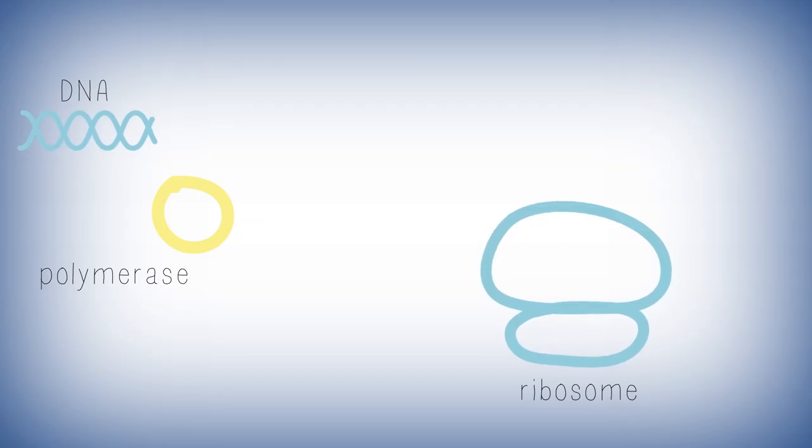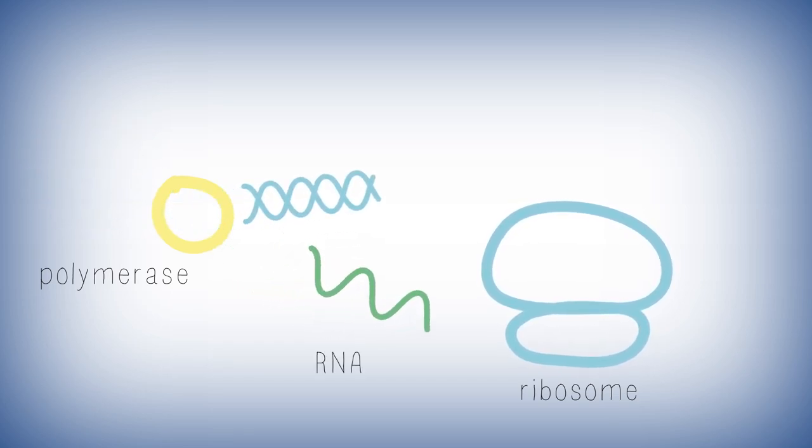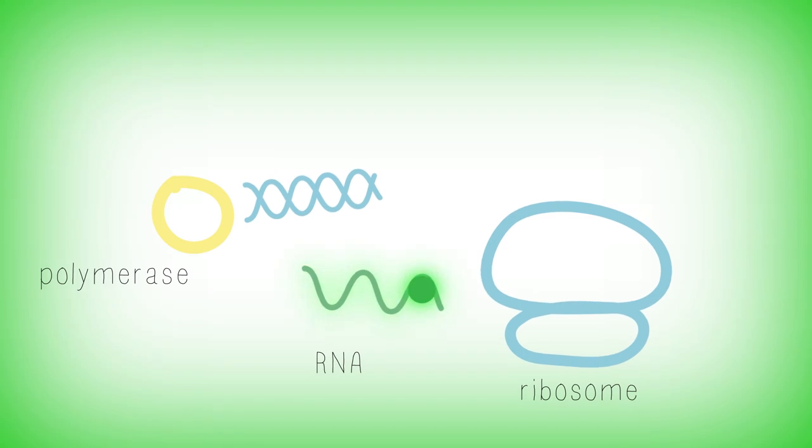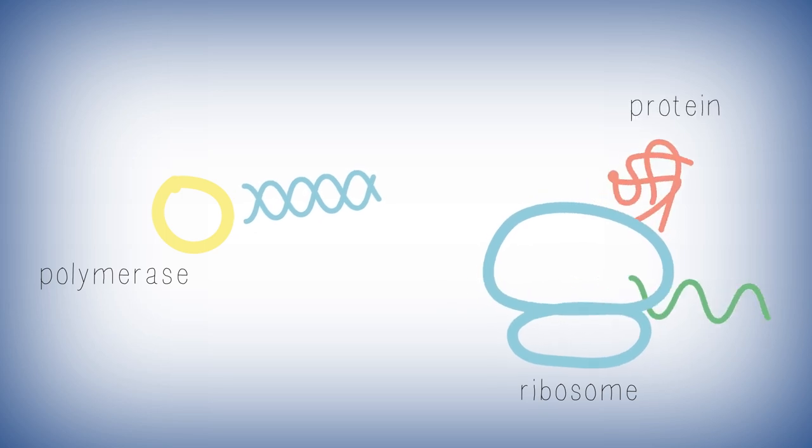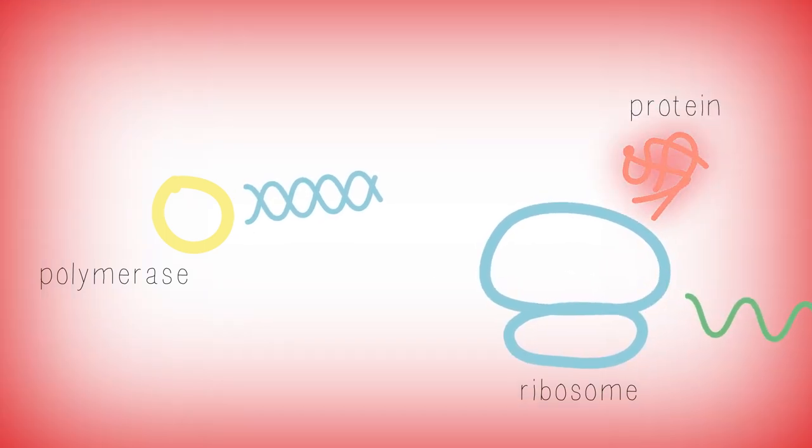When you add our specially designed DNA to the BioBits pellet, it is first transcribed into RNA. This RNA binds to a special fluorescent molecule, and the tube glows green. The RNA is then translated into a red fluorescent protein, causing the tube to glow red.